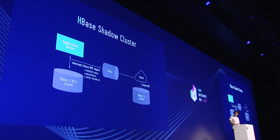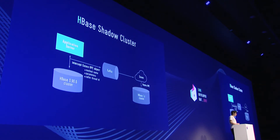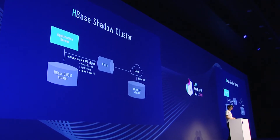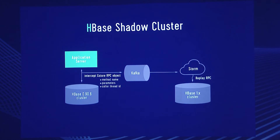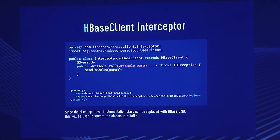This is what we did. On the top left, you see the application server — the commercial application server, which we call talk server. We manipulated it slightly so that access from the application server to HBase can be intercepted. The contents of the requests being sent to HBase are thrown to Kafka. From Kafka, you can pick up the request contents and replay them to impose a similar load — just like a commercial environment. You don't really have to manipulate the application side much, because the HBase 0.96 RPC layer can be replaced with an older HBase version. You can write an XML override and overwrite the code method so that the parameter can be sent to Kafka.